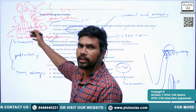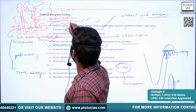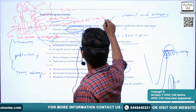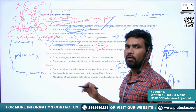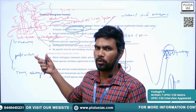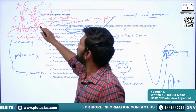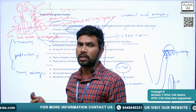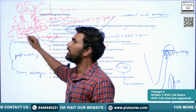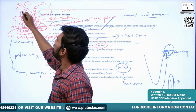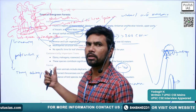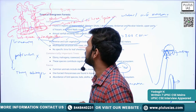Another characteristic is a great variety of tree species. Because of this species diversity combined with dense undergrowth and creepers, commercially exploiting this forest for timber becomes difficult since there is no uniformity in tree species.